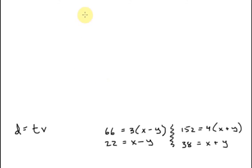So here's my system. And it looks like this. I've got 22 equals x minus y. And then I've got 38 equals x plus y. Well, this is made for elimination because the y's are ready to just cancel right out. So I've got two x's equal to 60. Then I divide by the two.